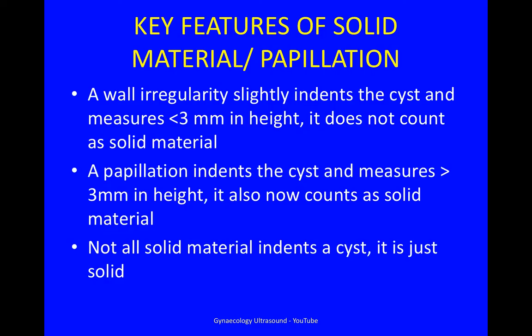So the key features are that a wall irregularity slightly indents the cyst and measures less than 3 mm in height, and does not count as solid material. A papillation indents the cyst and measures more than 3 mm in height, and also counts as solid material. Not all solid material indents the cyst — it is just solid.